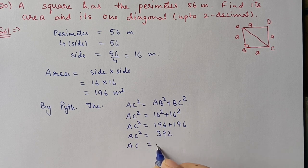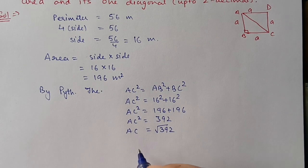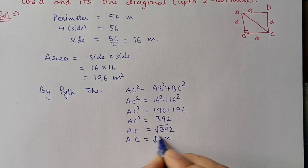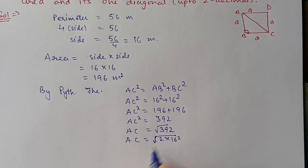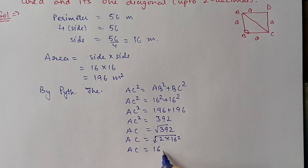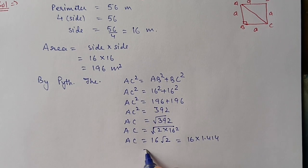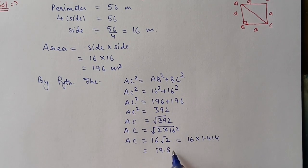So AC = √392 = √(2 × 16²) = 16√2. Substituting √2 = 1.414, we get 16 × 1.414 = 22.63 meters. This completes the diagonal calculation for Question 20.